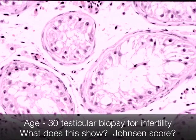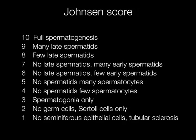This is Sertoli cell only. The Johnson score here is 2. The Johnson score is a continuum of appearances ranging from a score of 10, where there is full spermatogenesis, through to 1, where the seminiferous tubules are replaced by fibrous tissue with no epithelial cells. It is worth knowing what the Johnson score is and how to apply it, because clinicians may well request a Johnson score when sending testicular biopsies for assessment.